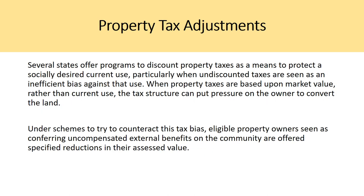There are also property tax adjustments. Several states offer programs to discount property taxes as a means to protect a socially desired current use, particularly when undiscounted taxes are seen as an inefficient bias against that use. When property taxes are based on market value rather than current use, the tax structure can pressure the owner to convert the land. Under schemes to counteract this tax bias, eligible property owners seen as conferring uncompensated external benefits on the community are offered specific reductions in their assessed value, though this involves significant bureaucratic steps.